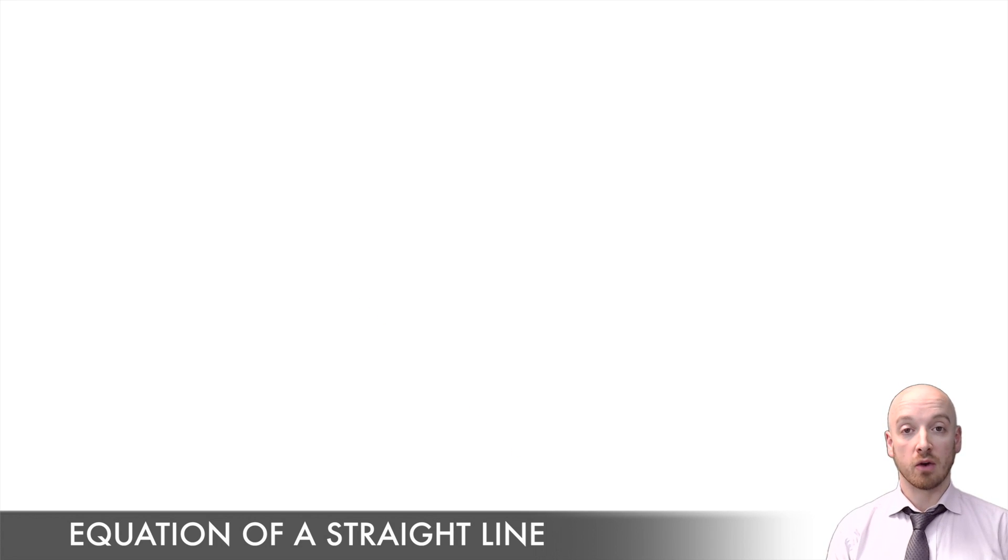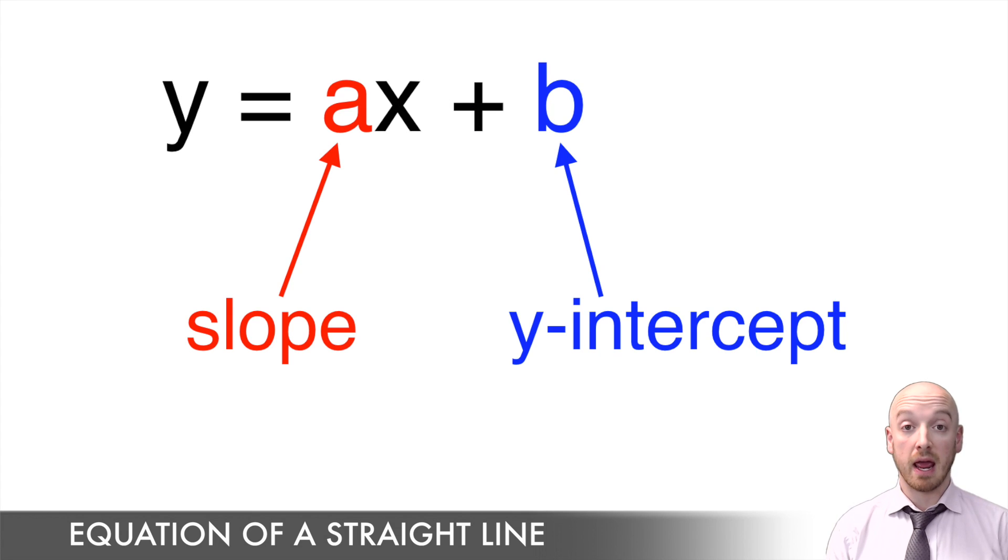So the format for writing the equation of a line looks exactly like this. And we read that y equals ax plus b. And you know from the last video that a represents the slope. And I'm telling you right now that b represents the y-intercept. So if a represents the slope and b represents the y-intercept, what are the x and the y doing in that equation?